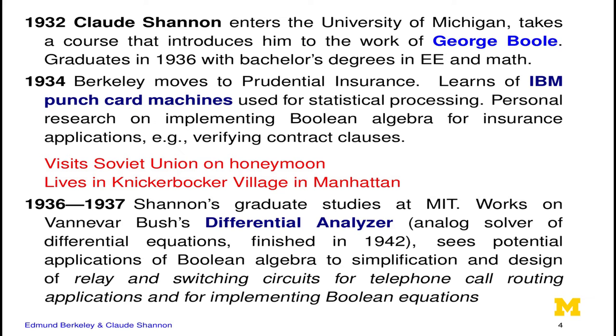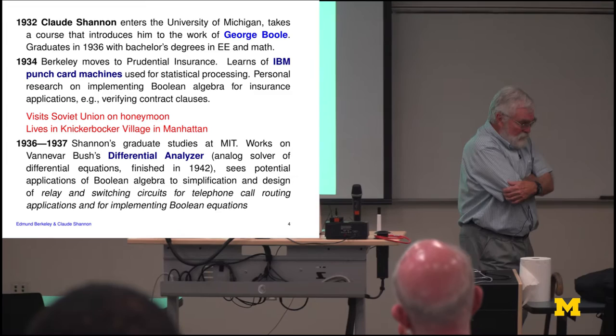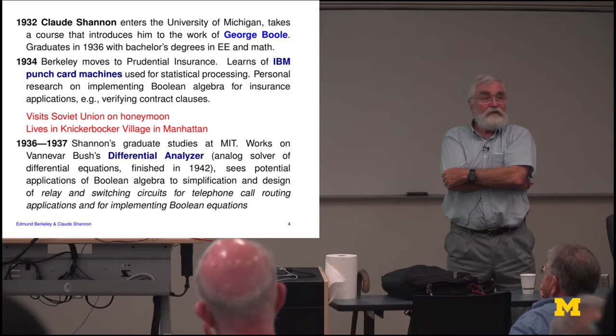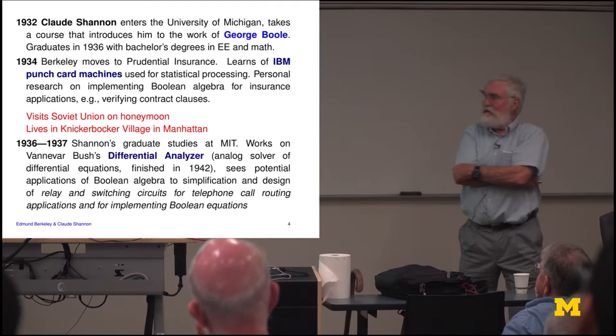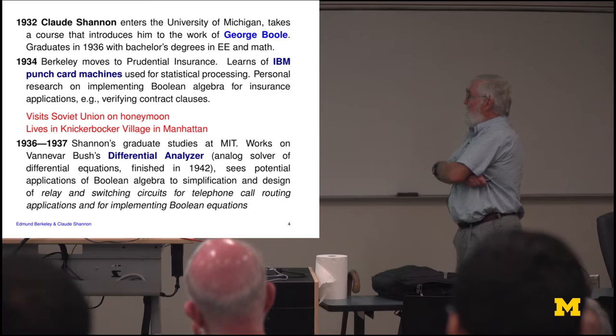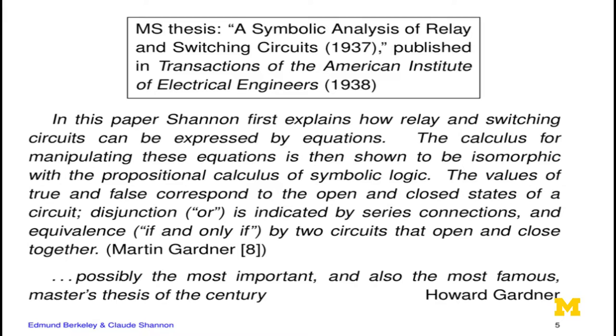In 1936, Shannon was at MIT and worked on the differential analyzer with Vannevar Bush, starting to realize that his knowledge of Boolean algebra ought to help design machines that do numerical computation. This was purely an analog machine, so Boolean algebra wasn't a big help there, but he was also writing a master's thesis. In his master's thesis, published in 1938, he pursues his interest in Boolean algebra — not applied to general computing, but specifically to relay and switching circuits useful in telephone networks.